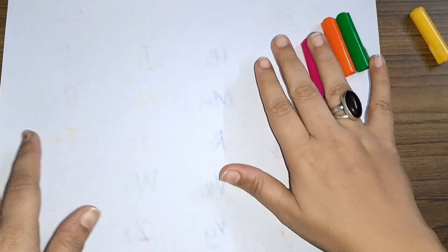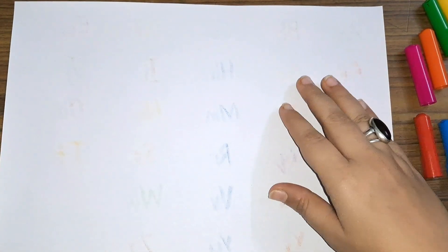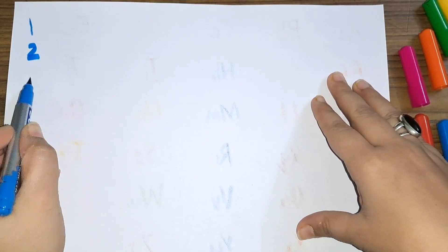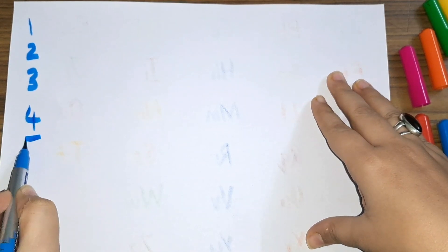We have got some colors and we have got some paper. Now let us write numbers: 1, 2, 3, 4, 5, 6, 7, 8, 9, and 10.